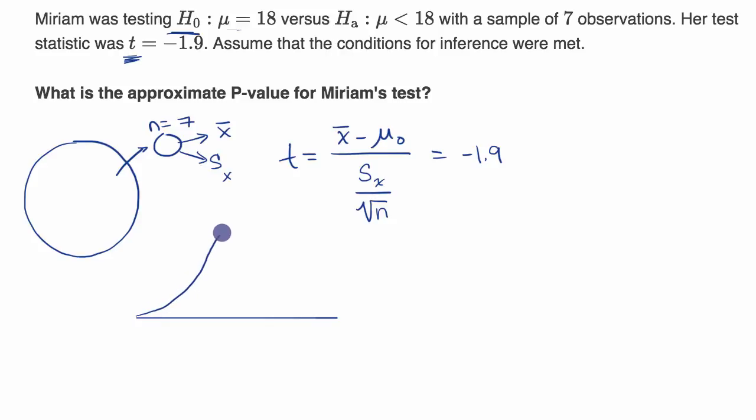I'll try to hand draw a rough t-distribution. And if this is the mean of the t-distribution, what we are curious about, because our alternative hypothesis is that the mean is less than 18, is what is the probability of getting a t-value that is more than 1.9 below the mean? So this right over here, negative 1.9. So it's this area right there.